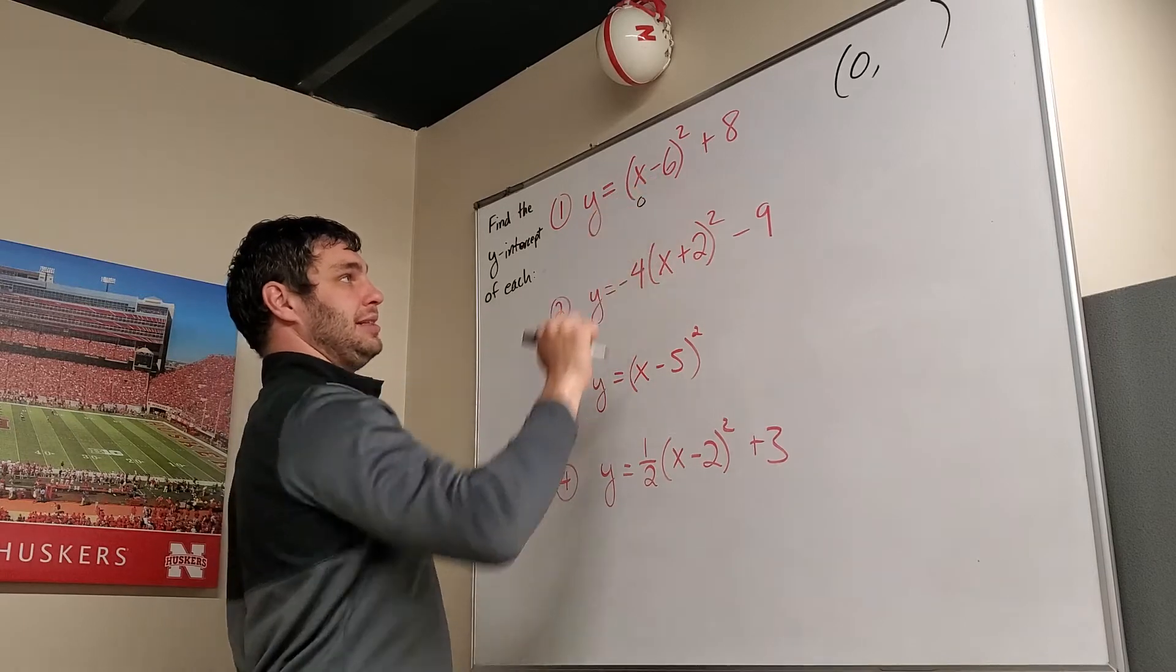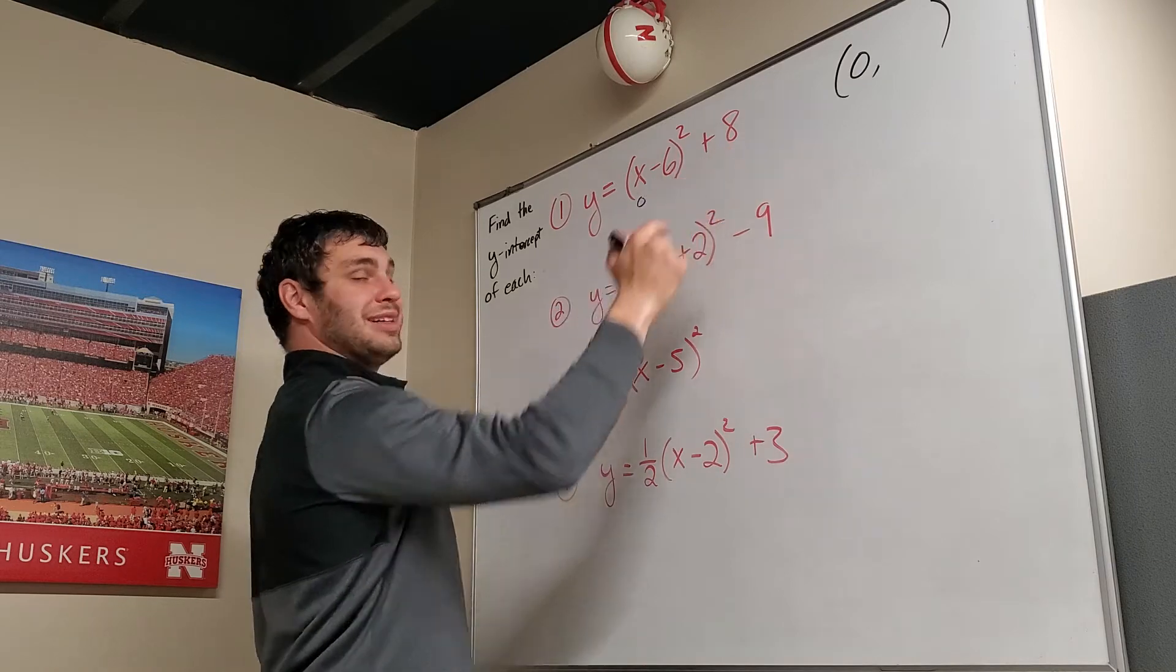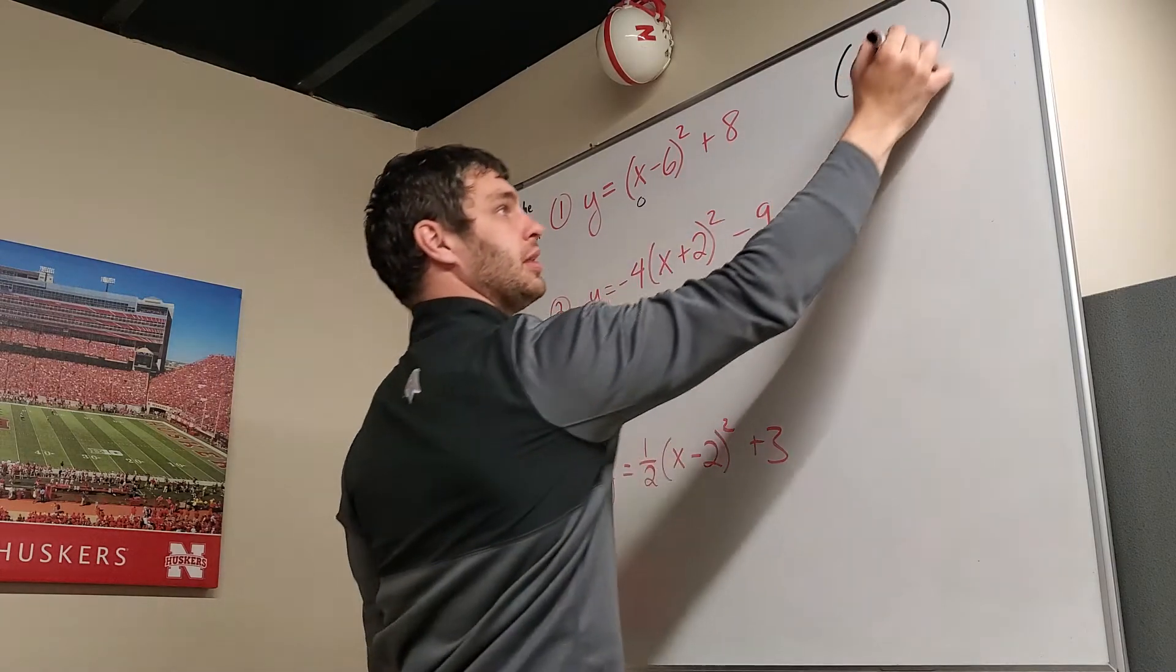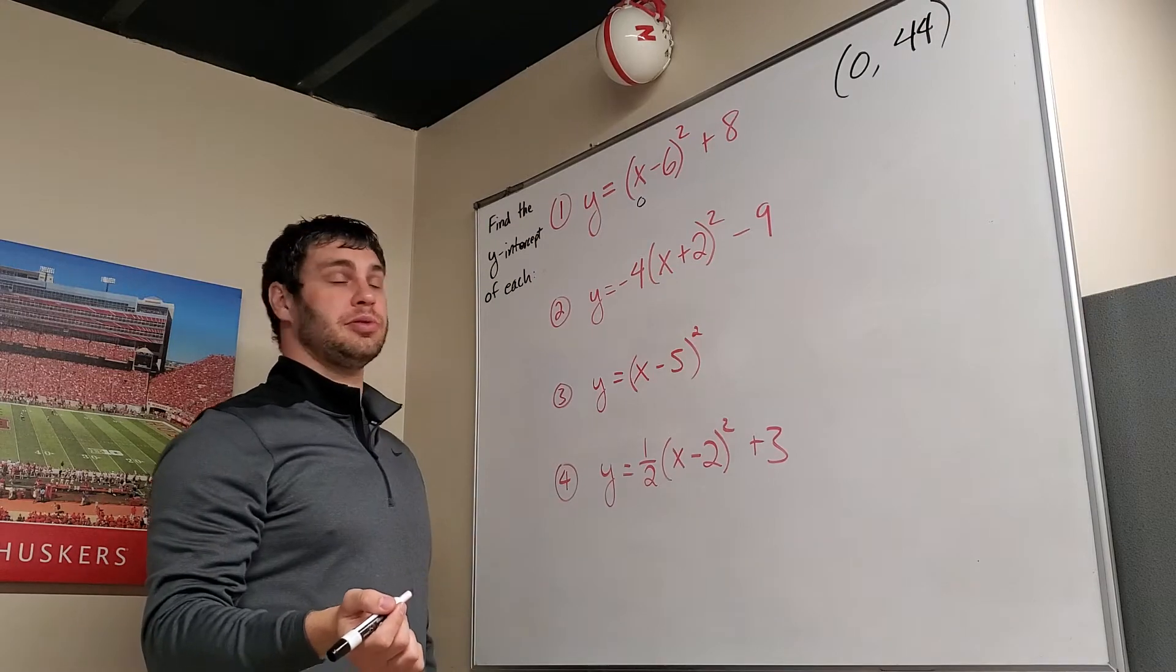This one, 0 minus 6 is negative 6. Negative 6 squared is 36. 36 plus 8 is 44. So this one has a y-intercept of (0, 44).